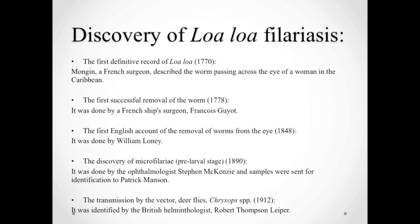The first definitive record was by a French surgeon in 1770, who described the worm passing across the eye of a Caribbean woman in Santo Domingo; however, he was not successful in removing it. In 1778, a French ship surgeon noticed that slaves in transit from West Africa to America suffered from inflammation in their eyes, and he successfully removed a worm from one of these individuals.